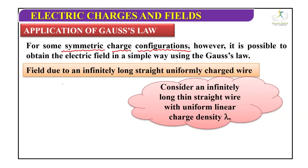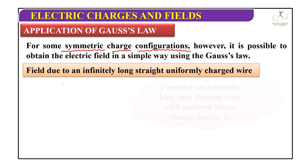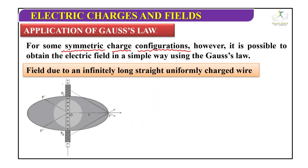Electric field due to an infinitely long straight uniformly charged wire: Consider an infinitely long thin straight wire with uniform linear charge density lambda. There is a point P where we have to calculate the electric field. Since electric field lines are radially outward for a positive charge, we need a Gaussian surface enclosing the charges. This cylindrical surface is what we call a Gaussian surface.